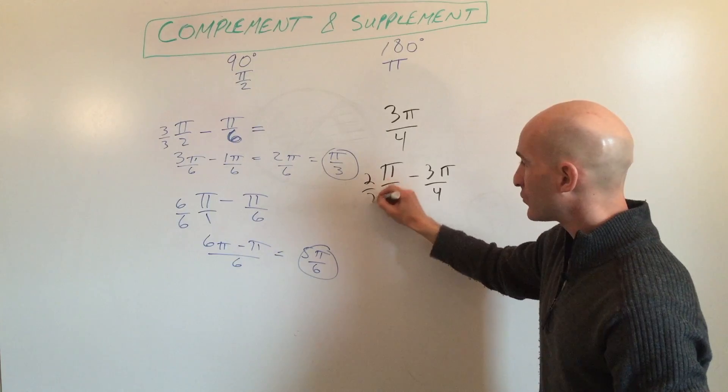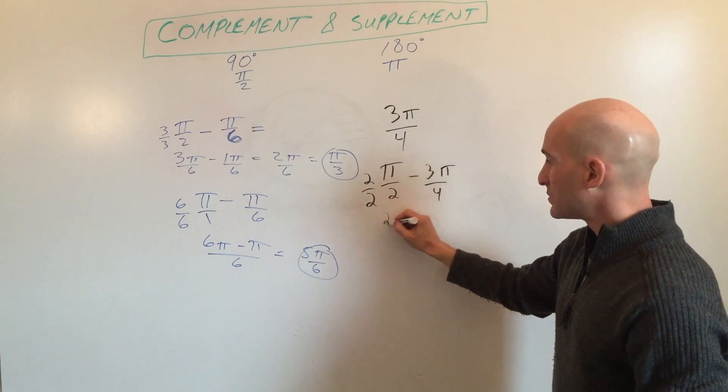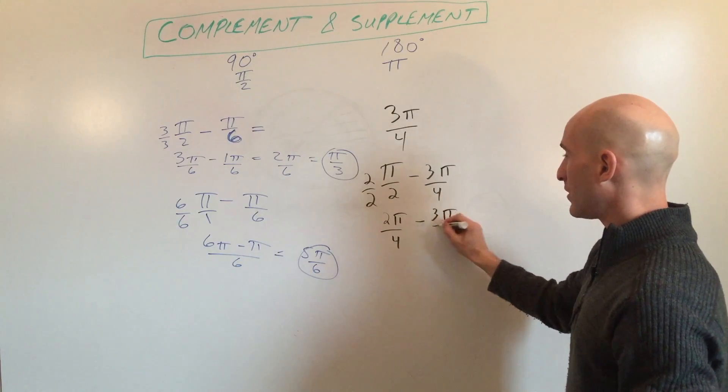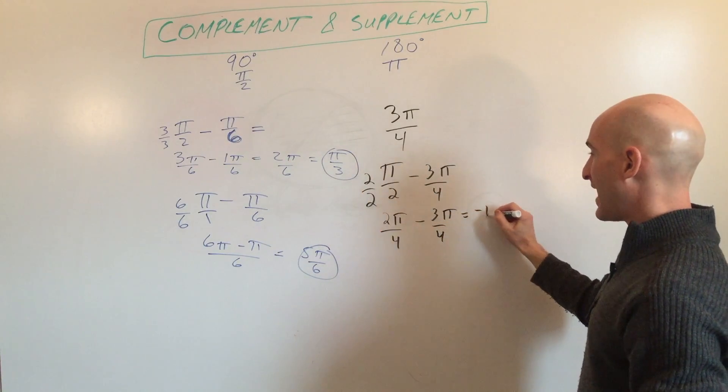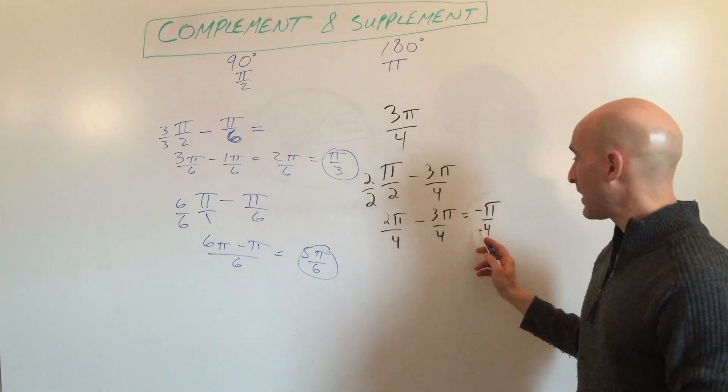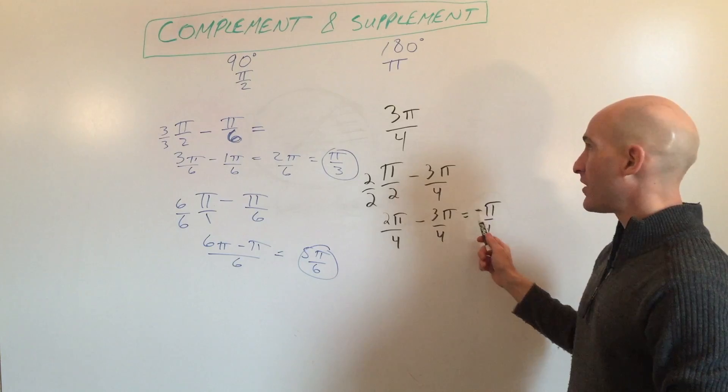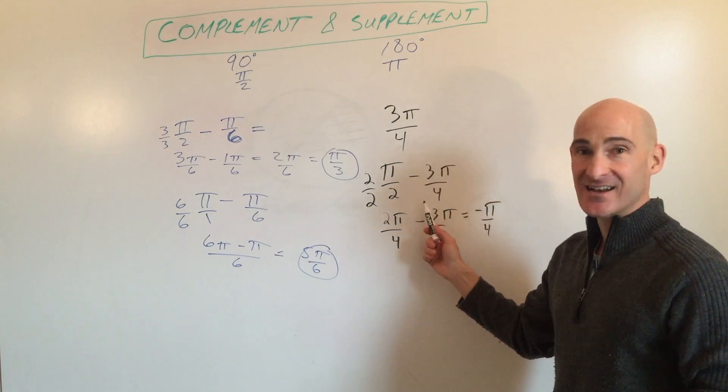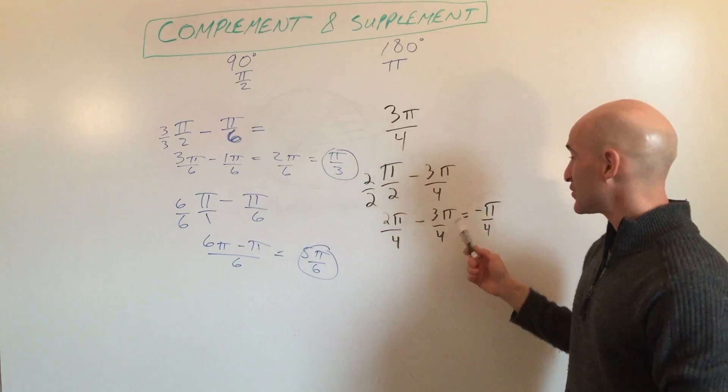multiply by 2 over 2, we get 2π over 4 minus 3π over 4 equals negative π over 4. So see how it came up to a negative angle? So what that means is that there's no complement, because this angle already exceeds 90 degrees or π over 2 radians. So no complement.